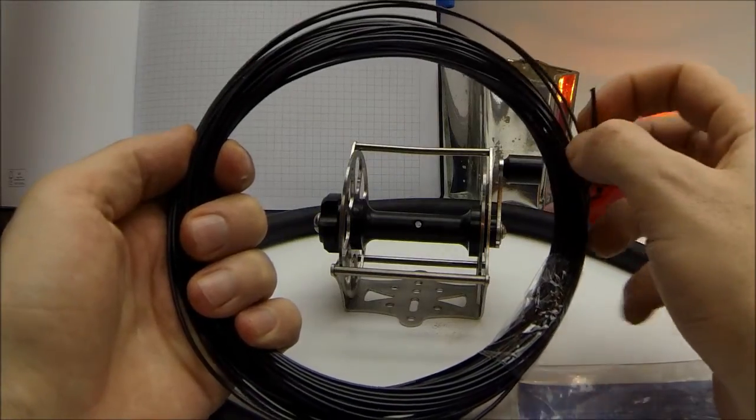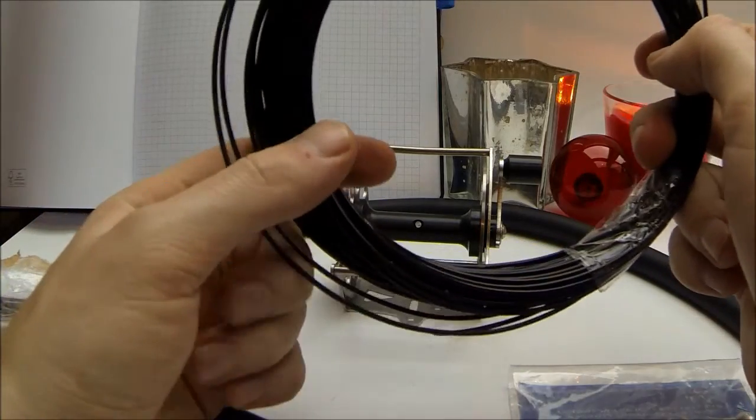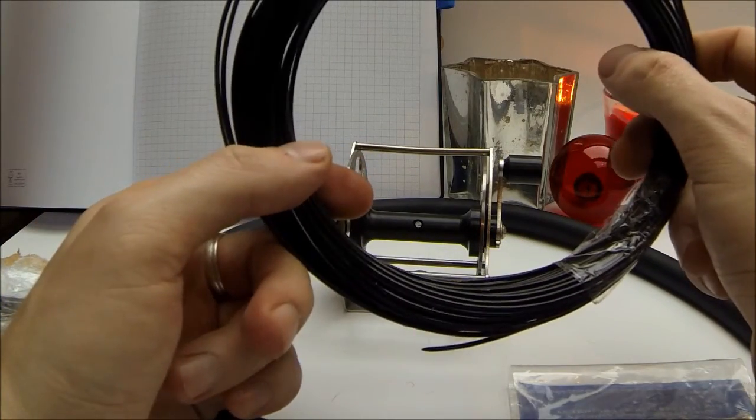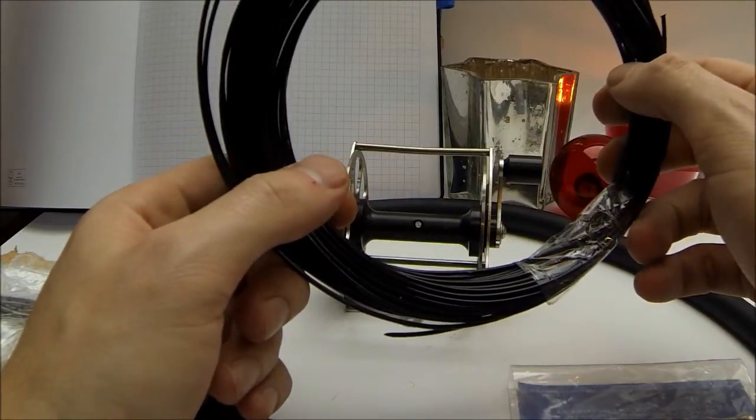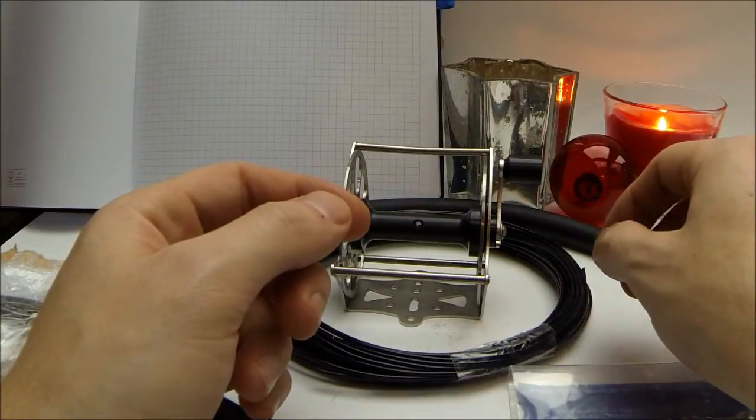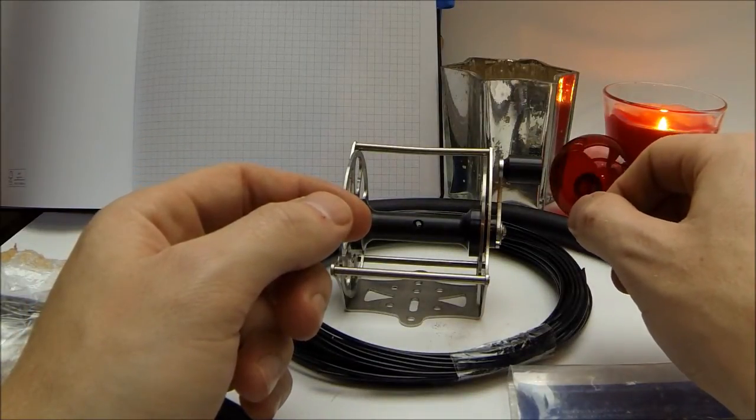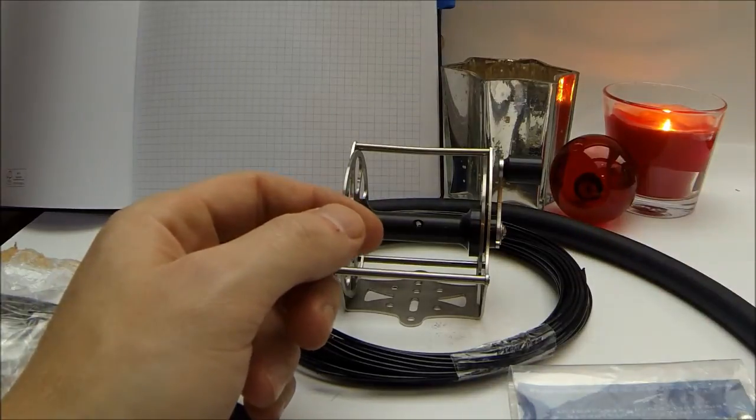And last, I've got this 2 millimeter nylon which is for rigging the spear to the gun. This is one of the last steps of building the gun. Now I'll show you a price list of what I paid for all these parts, and then we'll start the building process.